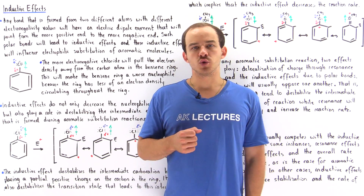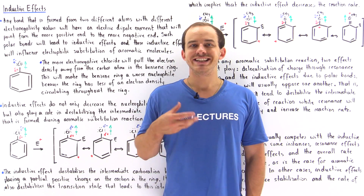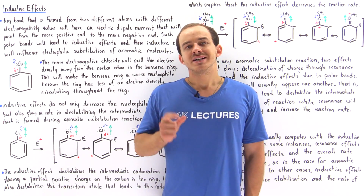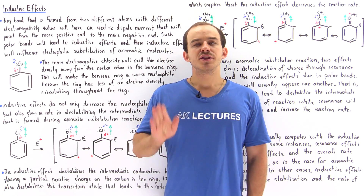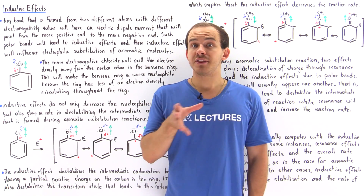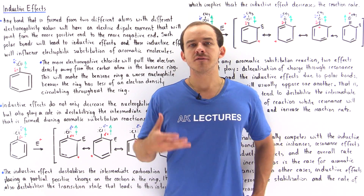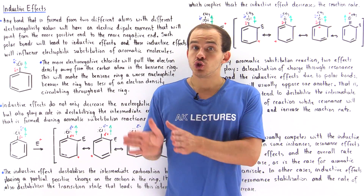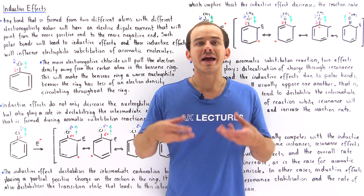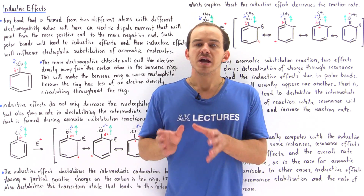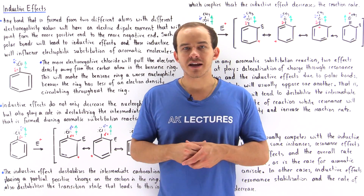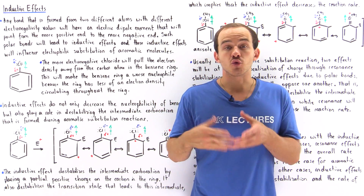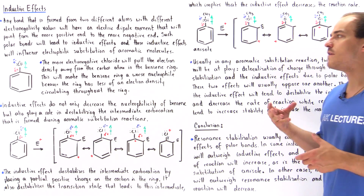Whenever a substituted benzene molecule undergoes an electrophilic substitution reaction, inductive effects in that molecule will play a role to decrease the rate of our reaction and also decrease the stability of the intermediate carbocation that is formed. Before we examine how and why that takes place, let's recall what inductive effects actually are. Any bond between two different atoms with different electronegativity values will form an electric dipole moment pointing from the more positive atom to the more negative atom. Such polar bonds create inductive effects that influence the rate of the electrophilic substitution reaction of aromatic molecules.